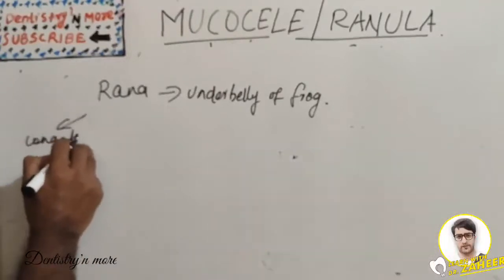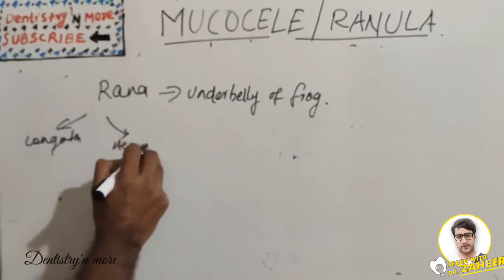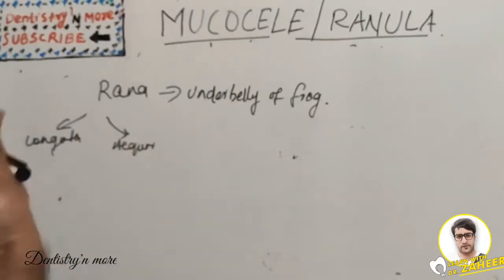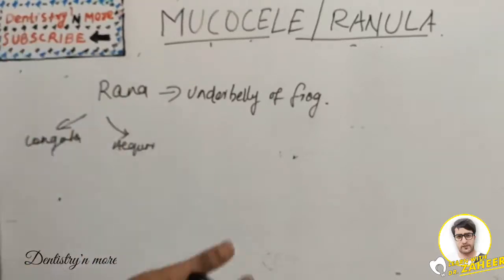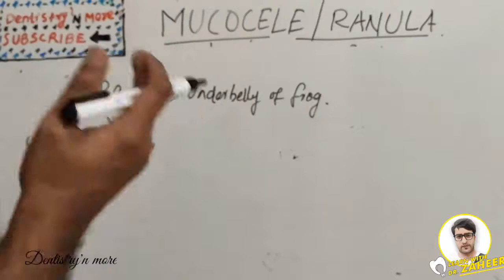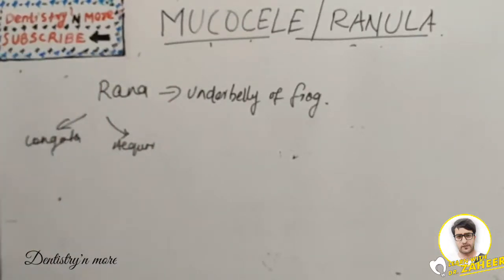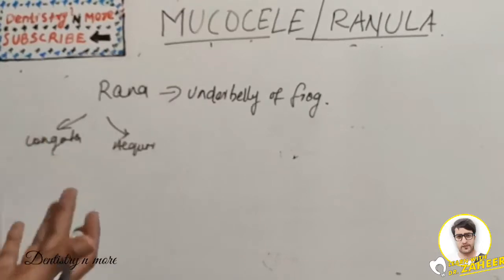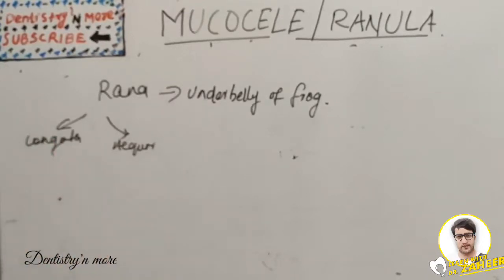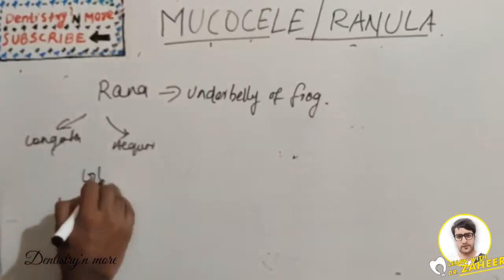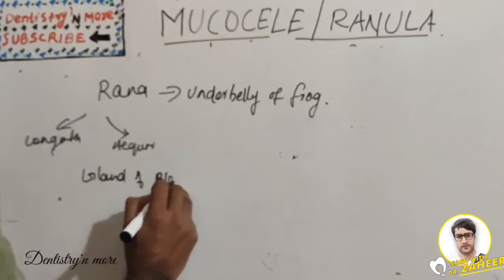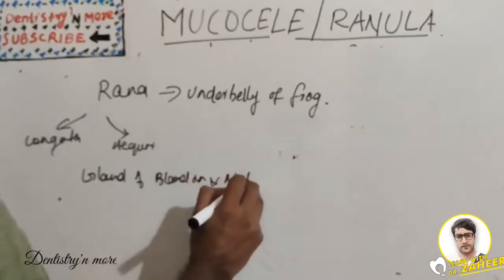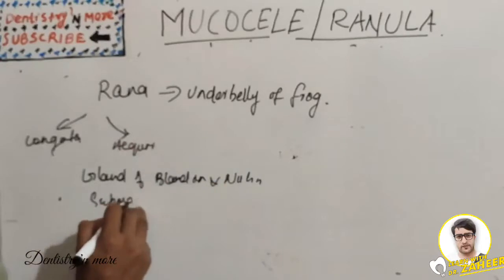Ranula can be classified as congenital or acquired, and it is also found in newborn infants. The etiology involves obstruction of one of the salivary glands, and it is mostly a retention cyst. It can occur spontaneously or result after surgery of the floor of the mouth, especially in the submandibular duct area. This extravasation cyst can arise from the gland of Blandin-Nuhn or occasionally from the submandibular gland.